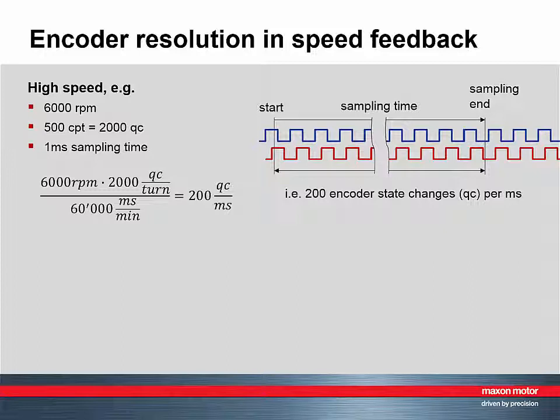This results in 200 quad counts per millisecond, where one millisecond is a typical sampling time. The resolution of the speed is one quad count per millisecond, corresponding in this case to 0.5% of the motor speed.